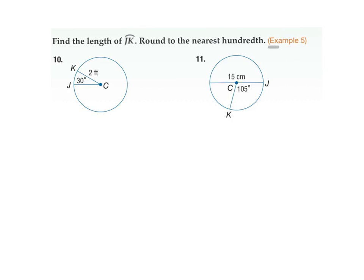So example five. And we're now doing question ten. We need to find the segment JK. That's this bit. The arc length. Well, first of all, you've got your fraction, which is going to be your degrees over 360. So that's going to be 30 over 360. And you're going to multiply that by 2 pi R.